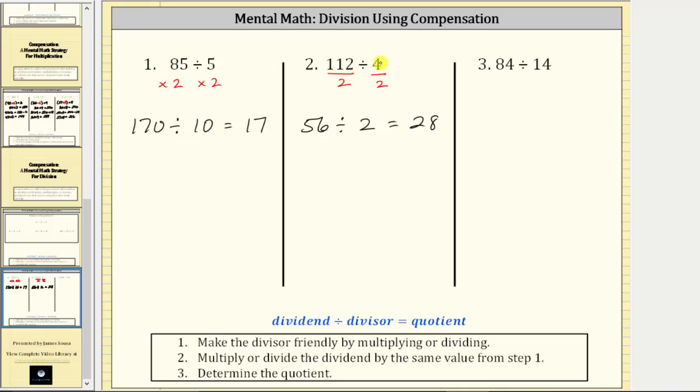Notice we could divide the divisor of two by two to have a divisor of one. Let's go ahead and do this just to show it. If we divide the divisor by two, we must also divide the dividend by two. 56 divided by two is equal to 28, and two divided by two is equal to one. And of course, 28 divided by one equals 28. We get the same quotient.